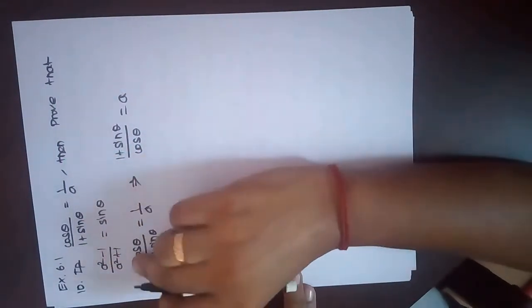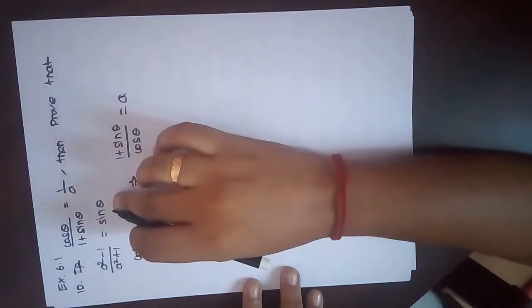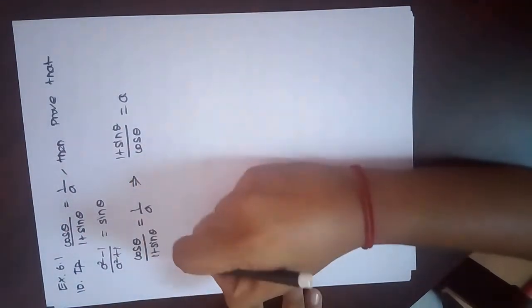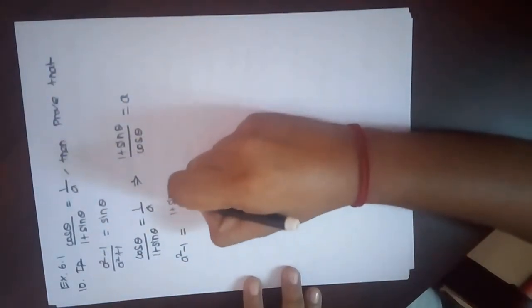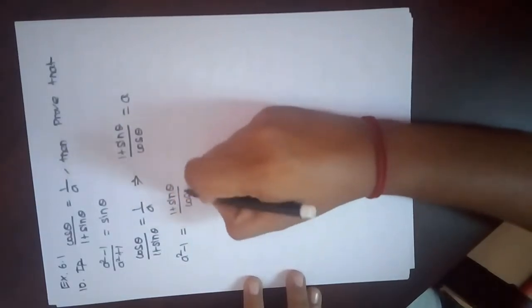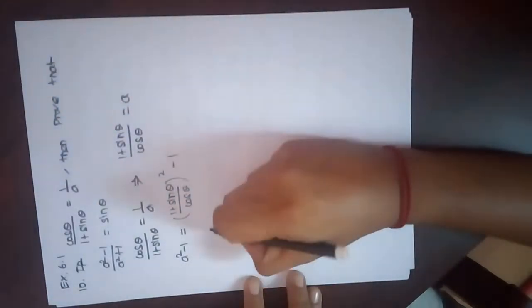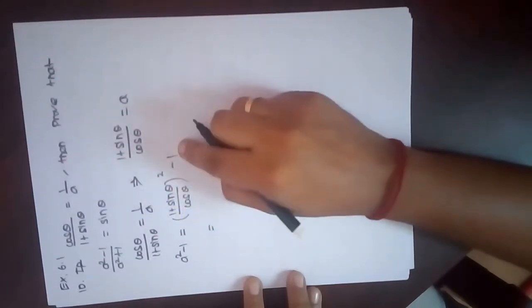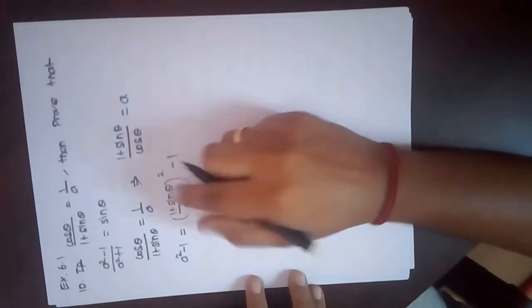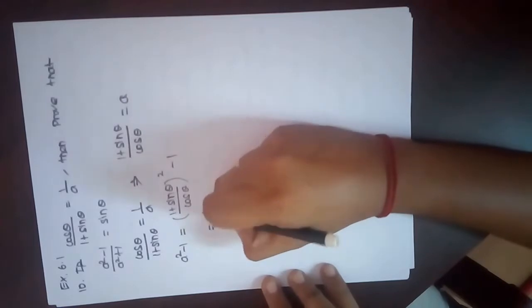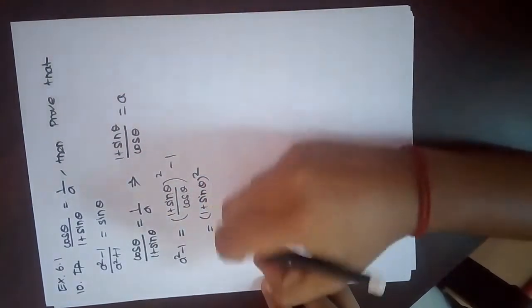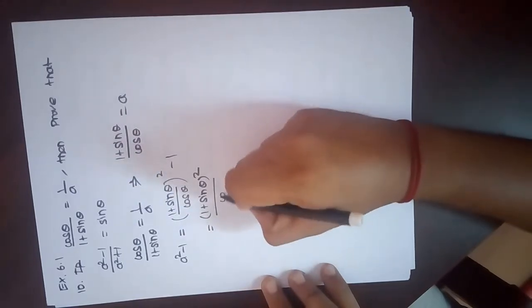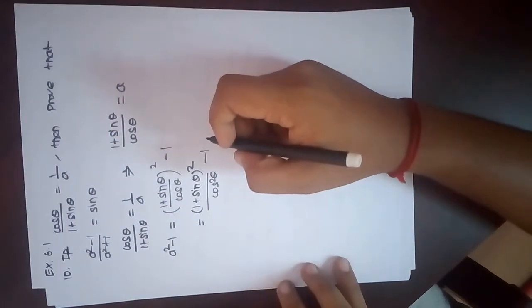I am going to write a² minus 1. A squared plus one divided by sin θ — prove a² minus 1. I am going to write a² minus 1 equal to (1 + sin θ / cos θ)² minus 1. So the square gives us a² minus 1.